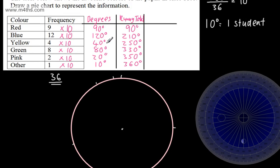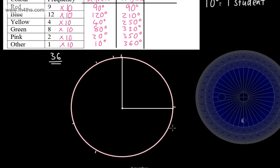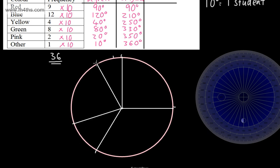The reason I've done it this way is that students sometimes start at 0, do 90, start at 0, do 120, start at 0, do 40, and it all ends up in the wrong place. So instead we connect each marked point to the centre to create the sectors correctly.